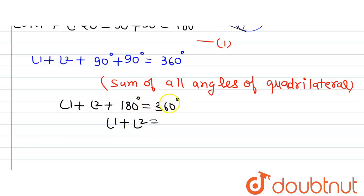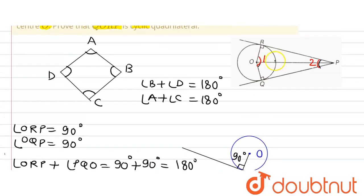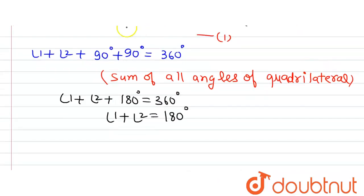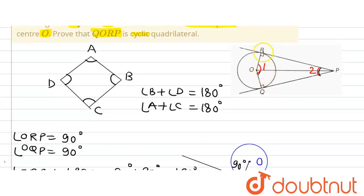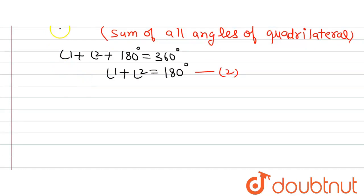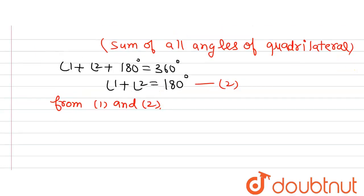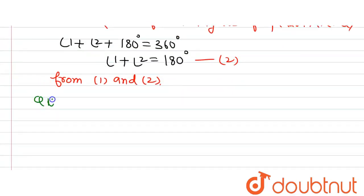So we have angle one plus angle two plus 180° equals 360°. This gives us angle one plus angle two equals 180°. We name this equation two. From equations one and two, the sum of both pairs of opposite angles of quadrilateral QORP is 180°. Therefore, QORP is a cyclic quadrilateral.